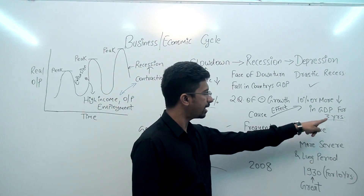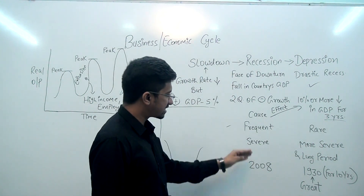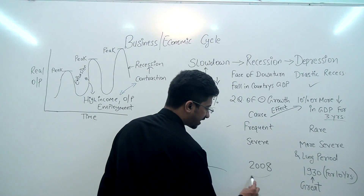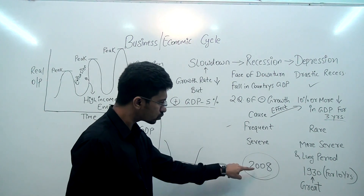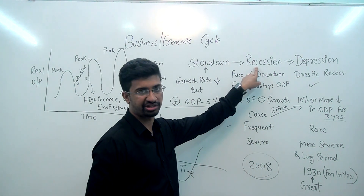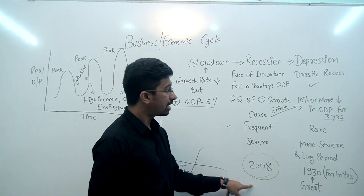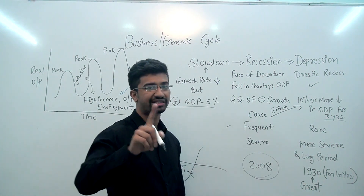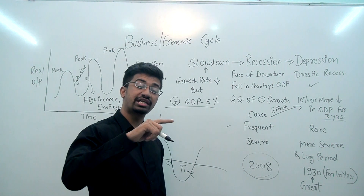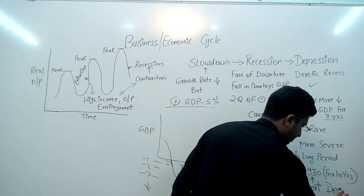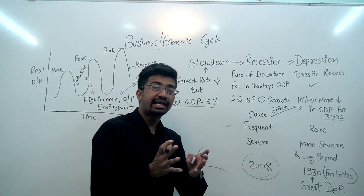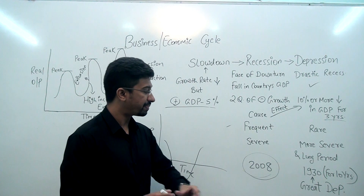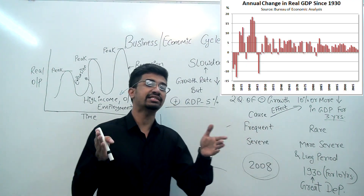Now, the example to help you divide and remember this: whenever we talk about the 2008 financial crisis, which happened recently, we say a recession had come. But whenever we talk about the 1930 depression, note that we do not just call it 'depression' — we call it the Great Depression, because it lasted for such a long period. So your question for today's video lecture is: how many years did the 1930 Great Depression last? Answer this in the comment box below.